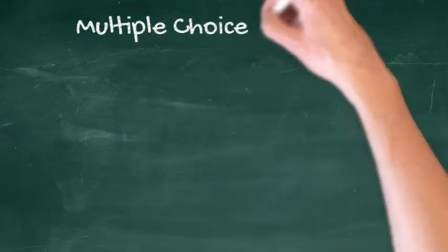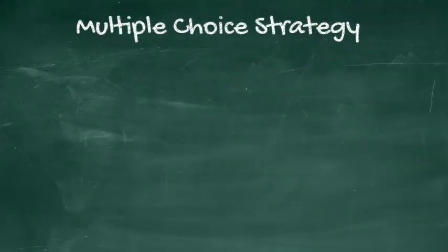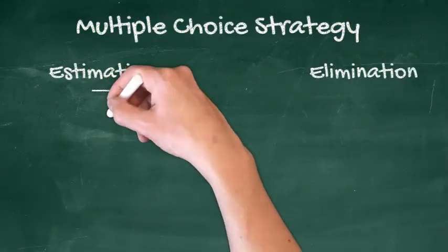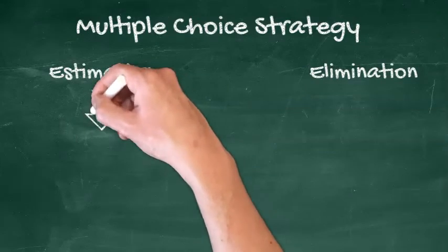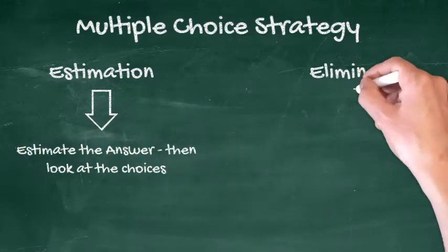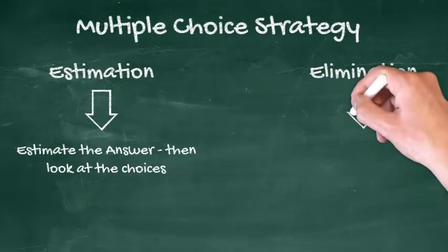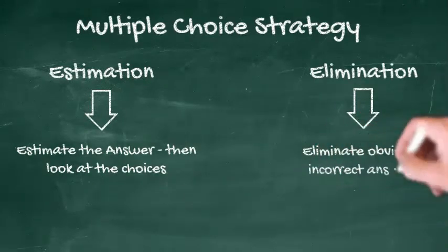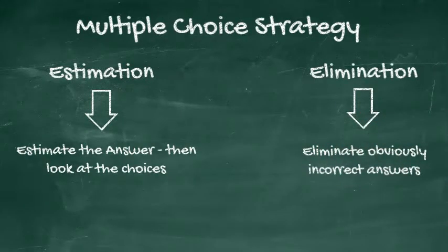Math multiple choice strategy. The two strategies for working with basic math multiple choice are estimation and elimination. Estimation is just as it sounds. Try to estimate an approximate answer first. Then look at the choices. Elimination is probably the most powerful strategy for answering multiple choice. Eliminate obviously incorrect answers and narrow the possible choices.